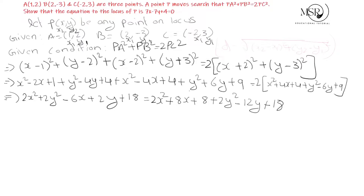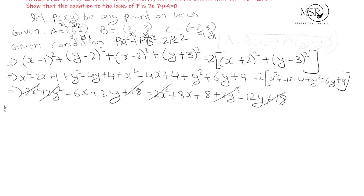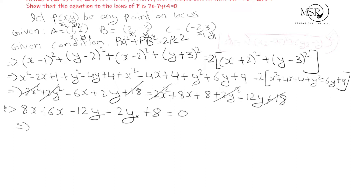Cancel 2x² from both sides, 2y² from both sides, and 18 from both sides. Remaining: 8x - 6x = -6x + 8x gives 14x on one side. For y terms: -12y + 2y gives -14y. Plus 8 equals 0. So: 14x - 14y + 8 = 0.